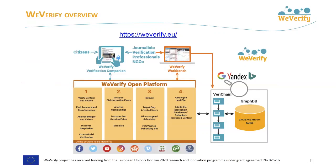Our tools support verification of textual claims, images and videos, content provenance and source trustworthiness. We support analysis of disinformation flows and community detection. The platform comprises a micro-targeting layer for debunking disinformation through alerting and warning users that share, reply to or like fake news, while also providing them with evidence of the fake.